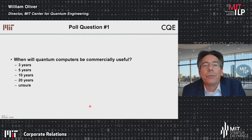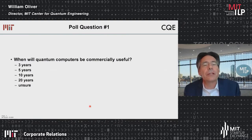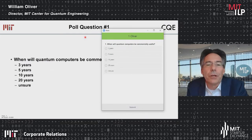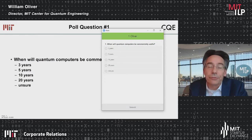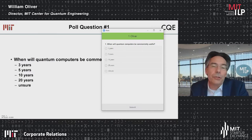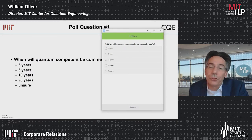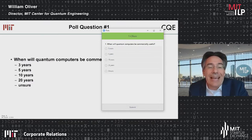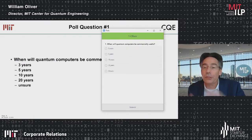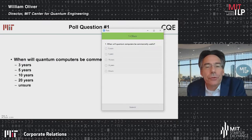I'd like to start with a poll question: when do you think quantum computers will be commercially available, useful, viable? That can mean different things to different people. Will it be in three years? Within five years? Ten years? Twenty years or more? When do you think quantum computers are going to be commercially useful?